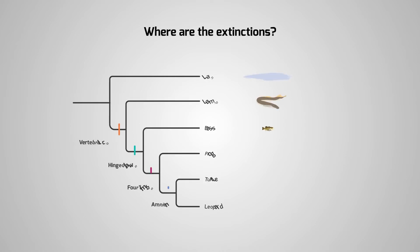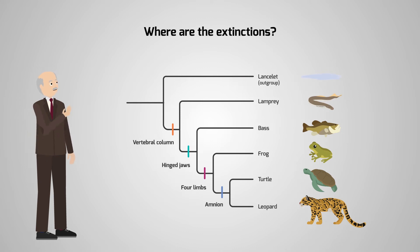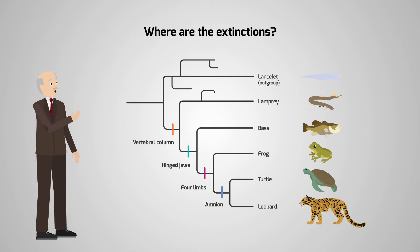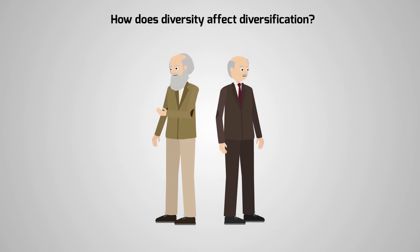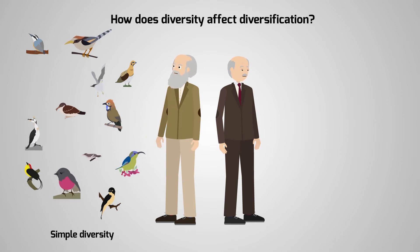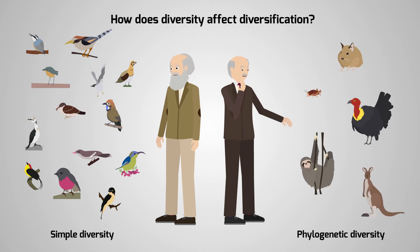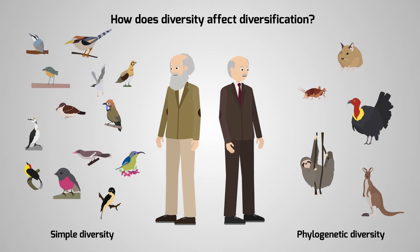How can we comment on the extinction clock without seeing an extinction? We can model the effect of extinct species on existing species, to mathematically infer the extinction clock's speed and predict the total number of extinct species. One hypothesis claims that diversity slows down diversification, as species fill the available niches, preventing the emergence of new species. Another hypothesis claims that diversity enhances diversification, as diverse species create new niches, providing more evolutionary space for the emergence of new species.